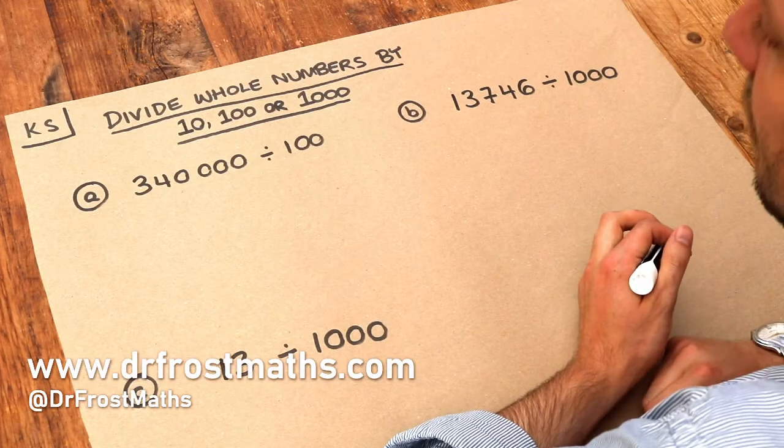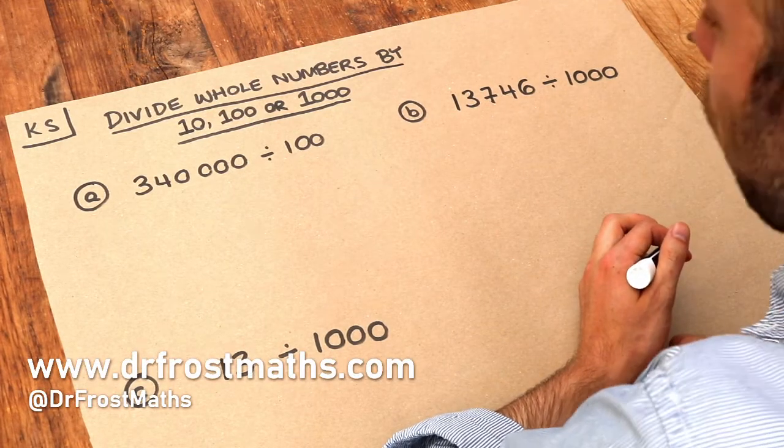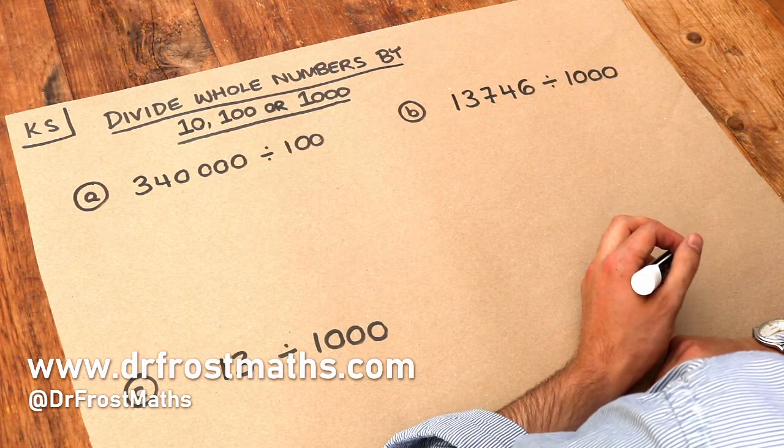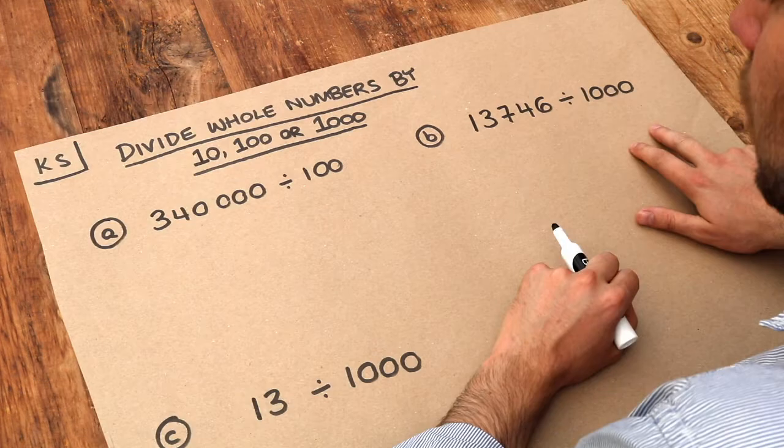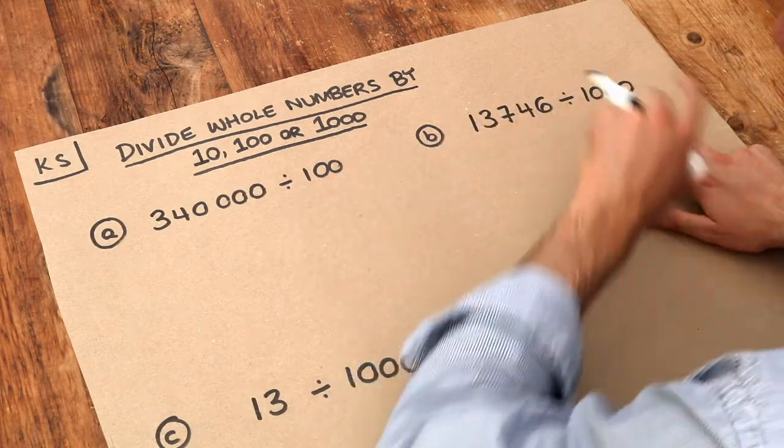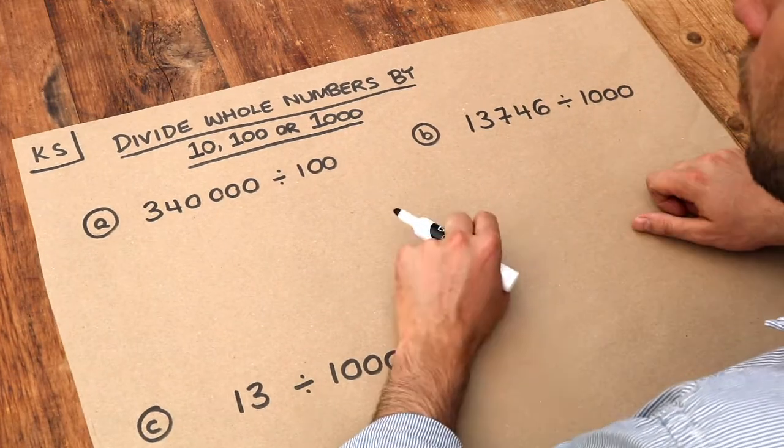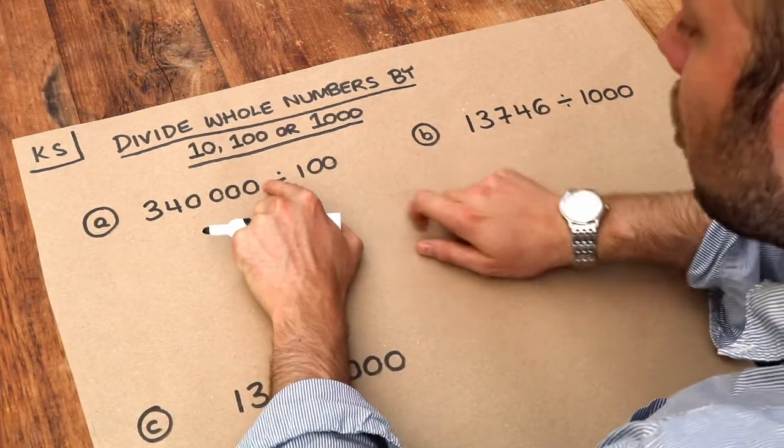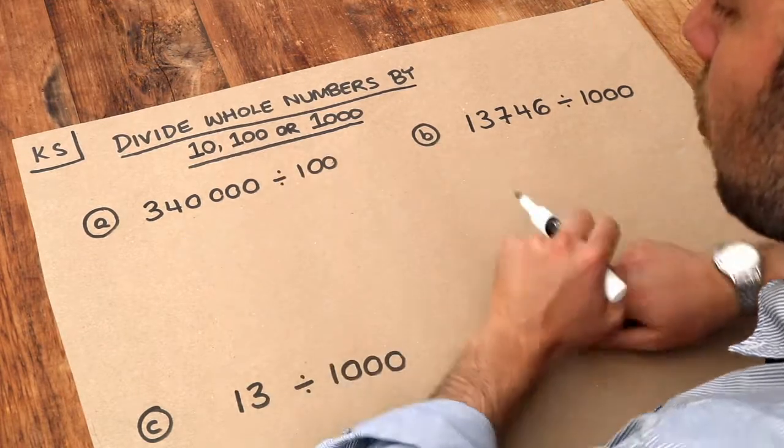Hello and welcome to this Dr. Ross Maths key skill video on dividing whole numbers by 10, 100, or 1000. When we divide by 10, 100, or 1000, we move the decimal point to the left by the number of zeros.